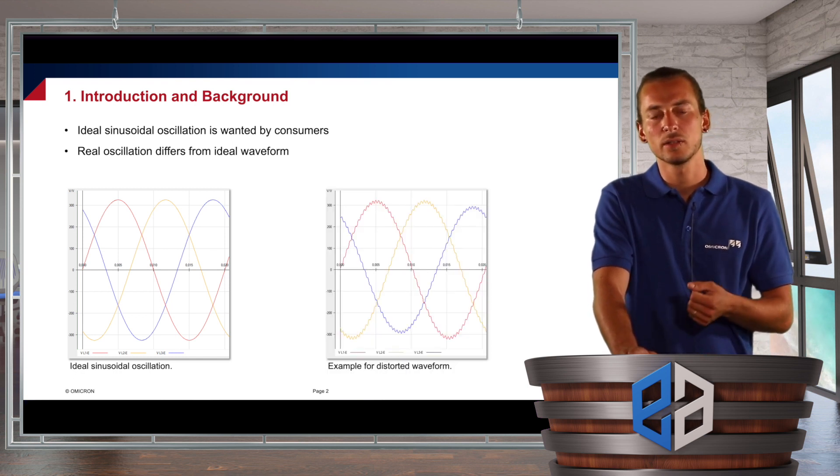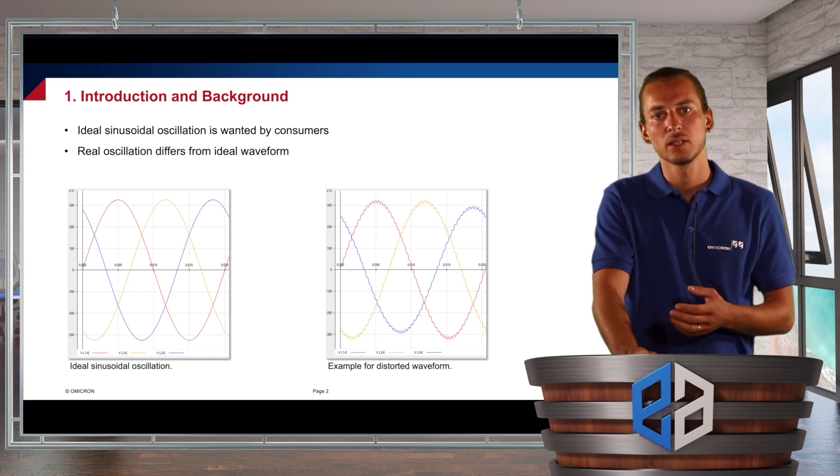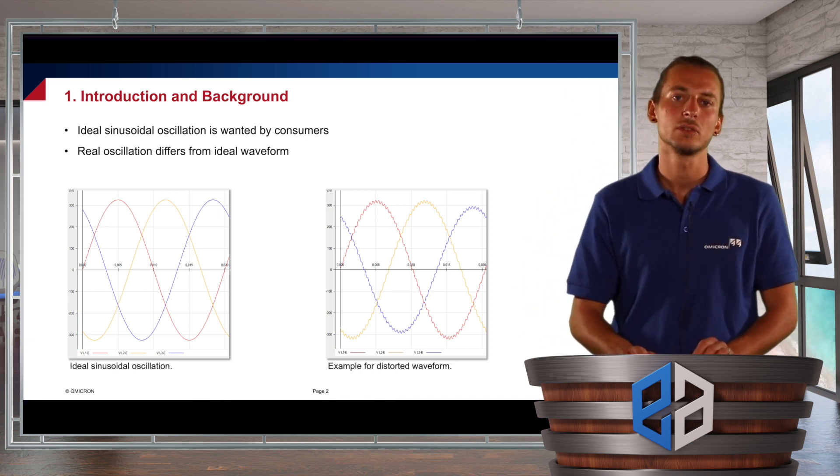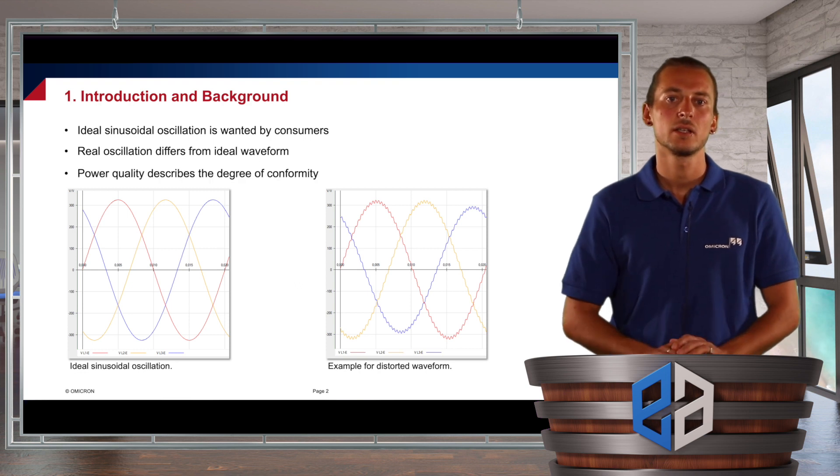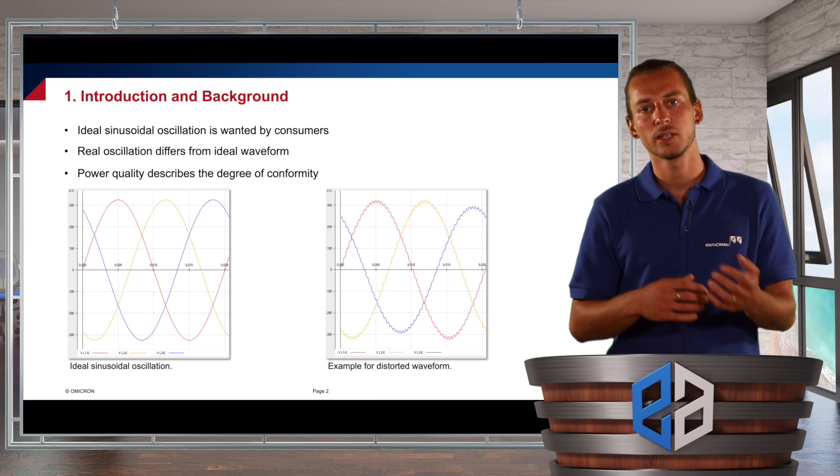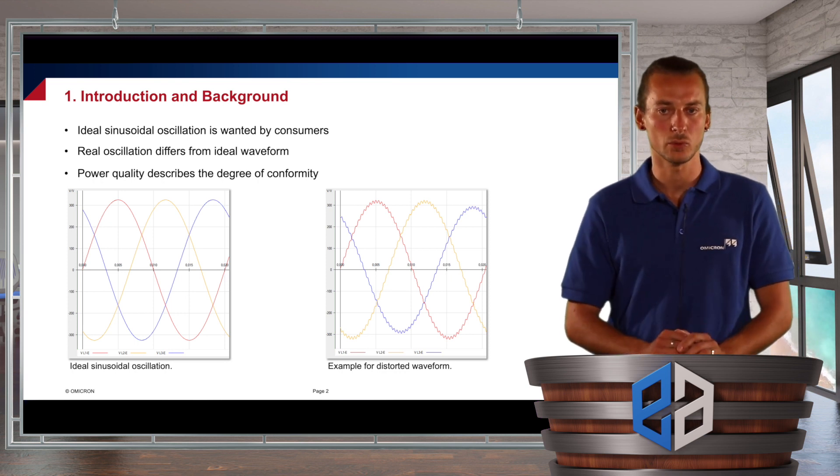Now, this is important. Power quality wants to measure or quantify the degree of conformity between the ideal waveform, which is sinusoidal, and a real disordered waveform in the grid.